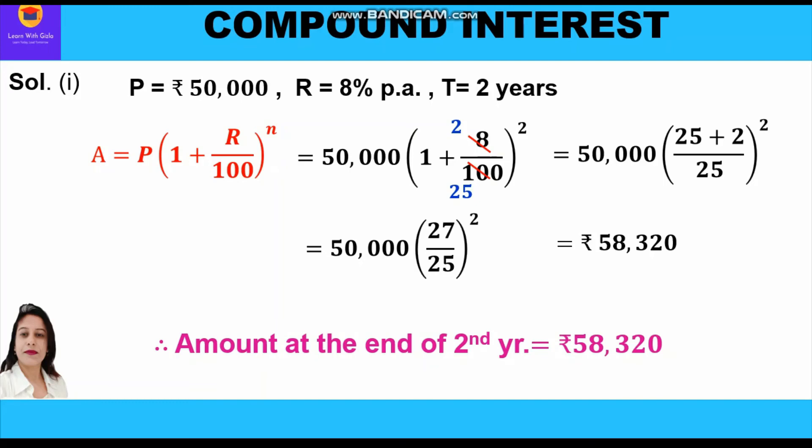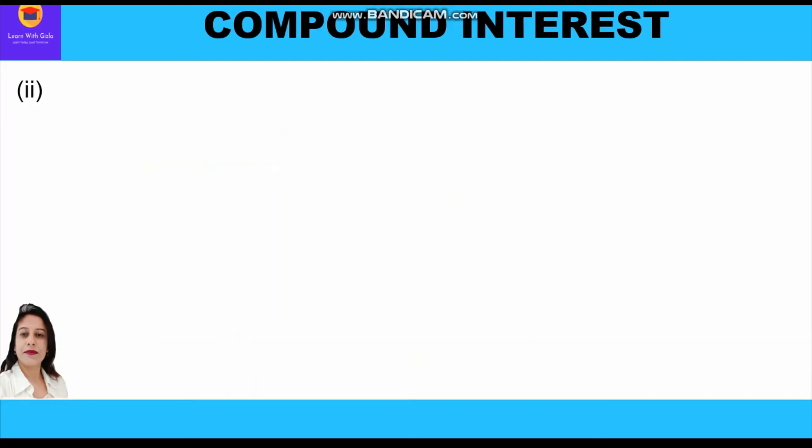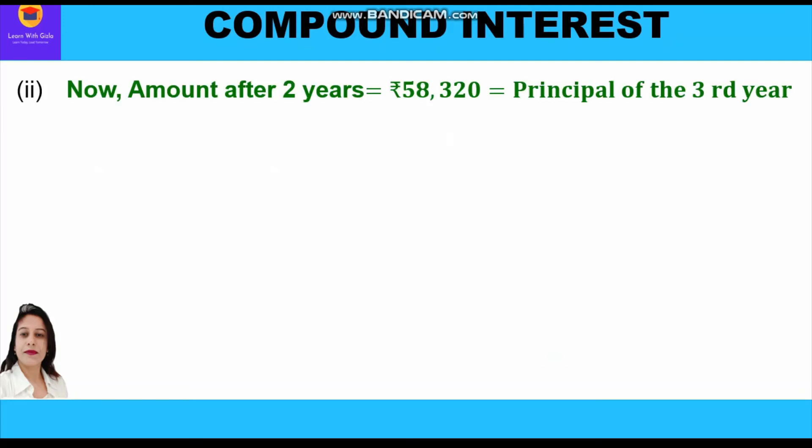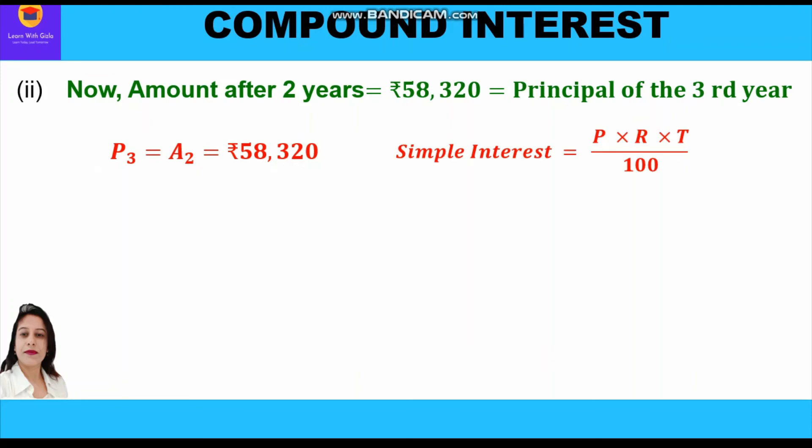The first part of the question is complete. Now we move to the second part, where we have to find the interest for the third year. For the interest, we need the principal of the third year. We know that the amount at the end of the second year becomes the principal of the third year. So rupees 58,320 is the principal for the third year.